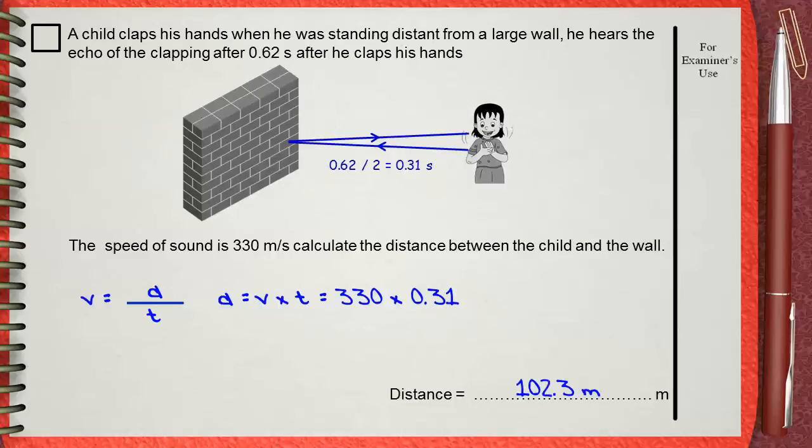This is 102.3 meters. This is the distance between the child and the wall.